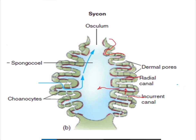On the inner wall of the Sycon body, choanocytes are present — shown as red cells. These determine the direction of water movement; the blue arrow shows this direction. The choanocytes are responsible for moving water out through the osculum. This completes the description of the second body form, the Sycon type.